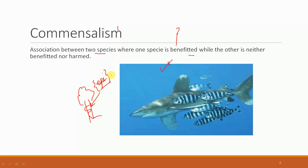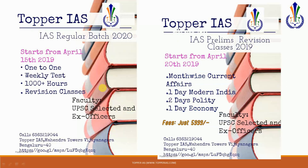What is important is that you understand the concept, and if a question does come, you should be able to identify what type of interaction it is — whether it is mutualism, symbiosis, or commensalism. So that's about commensalism and that's about our discussion today. Thank you all for watching the video.